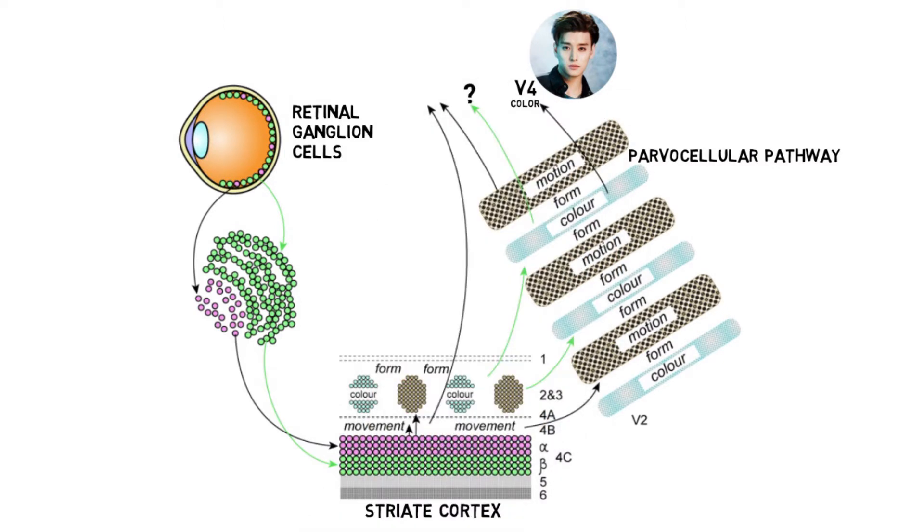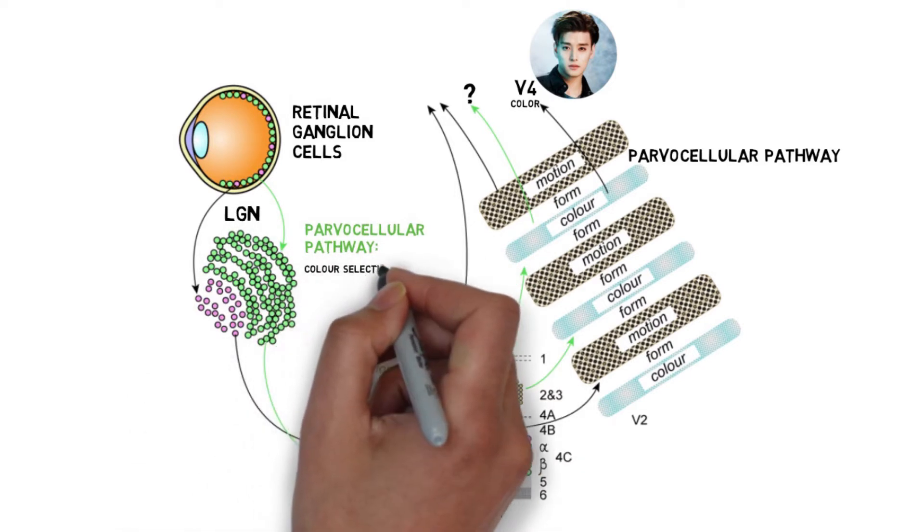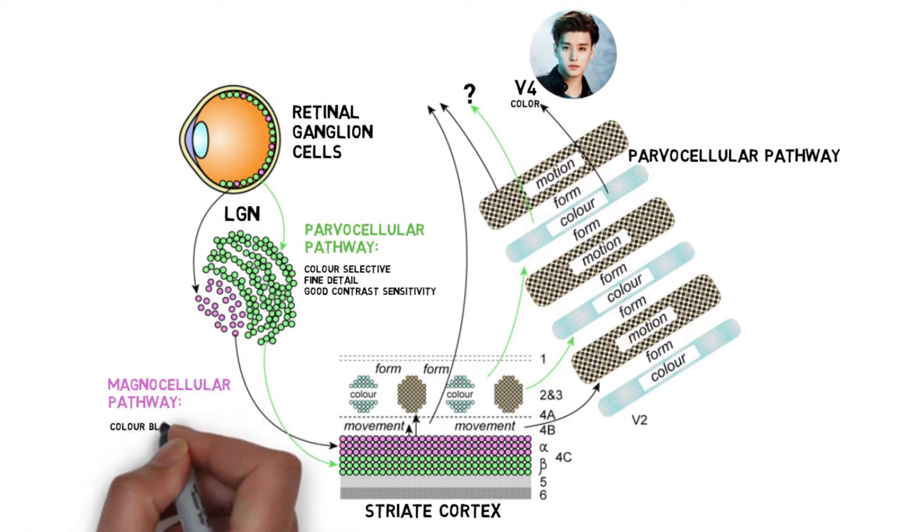The dorsal pathway receives inputs mainly from magnocellular cells from the lateral geniculate nucleus, and areas along this pathway respond largely to temporal frequency and motion.